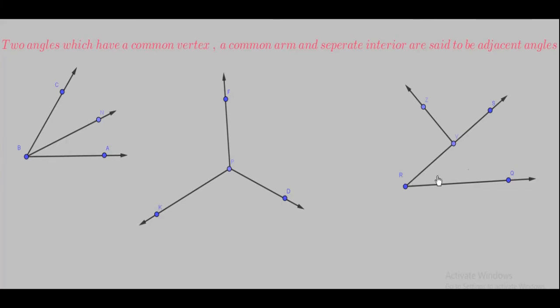This angle is SVZ and ZVR. These two angles are adjacent because V is the common vertex, VZ is the common arm, and they have two separate interiors. These three conditions—common vertex, common arm, and separate interior—must be satisfied for angles to be adjacent.